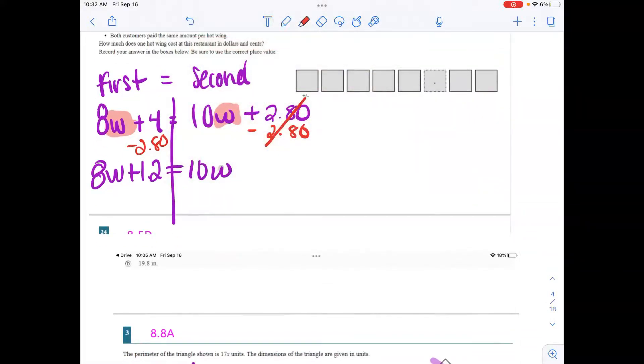So then we are now needing to get our variable terms on the same side. I'm going to move this 8W by the 10W. I'm going to move this as positive, so I'm going to make it negative over here and simplify everything. So 1.2 is equal to 2W. Divide this by 2 and this by 2. W is equal to 0.6, so 60 cents.